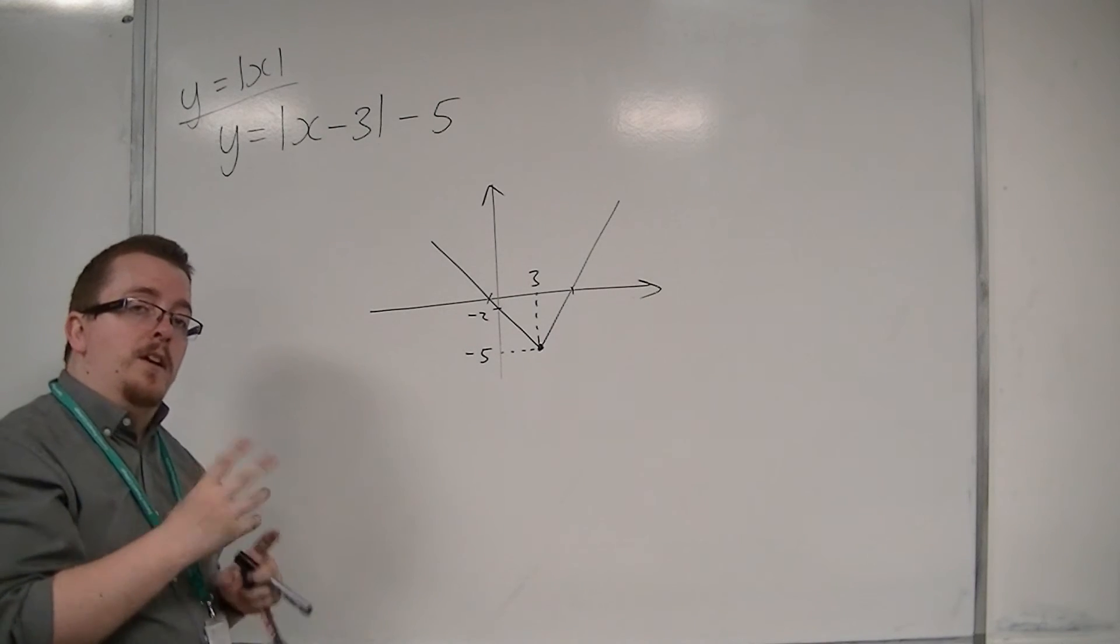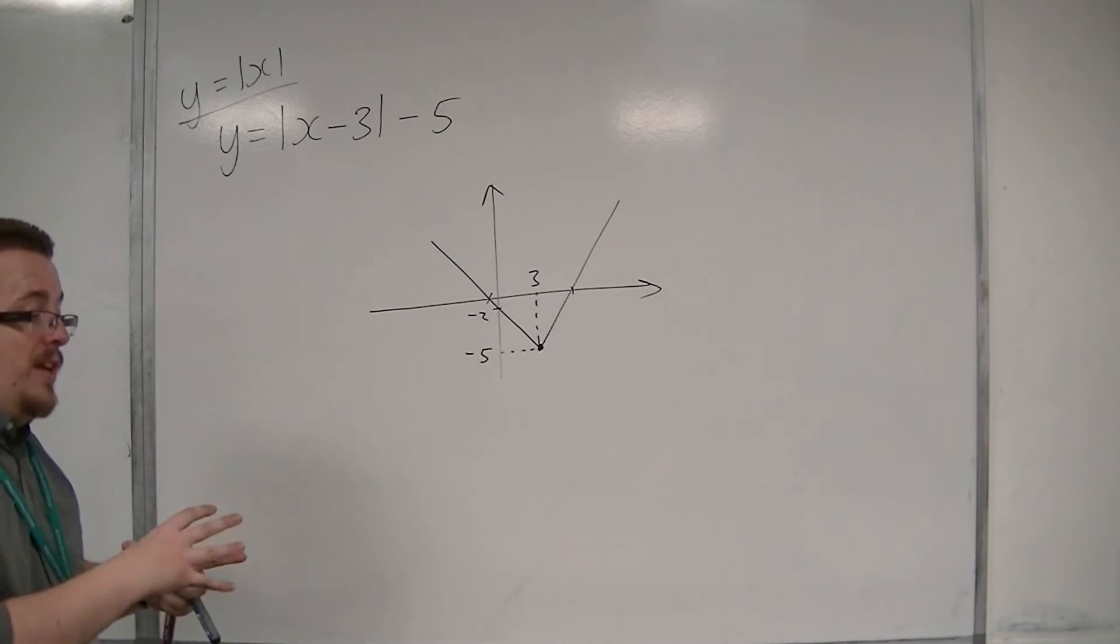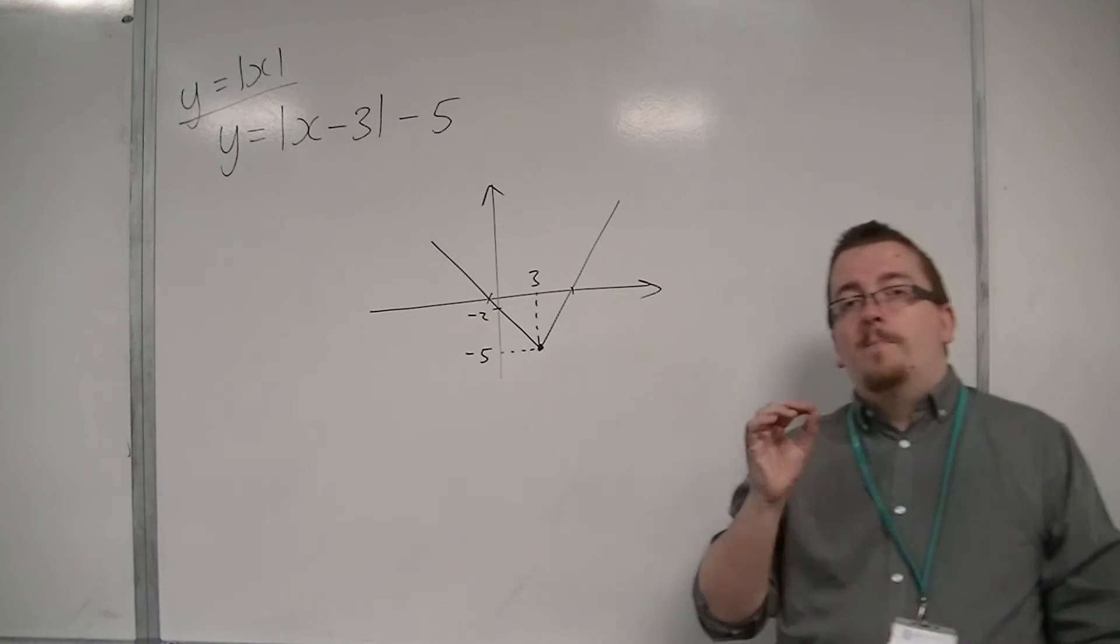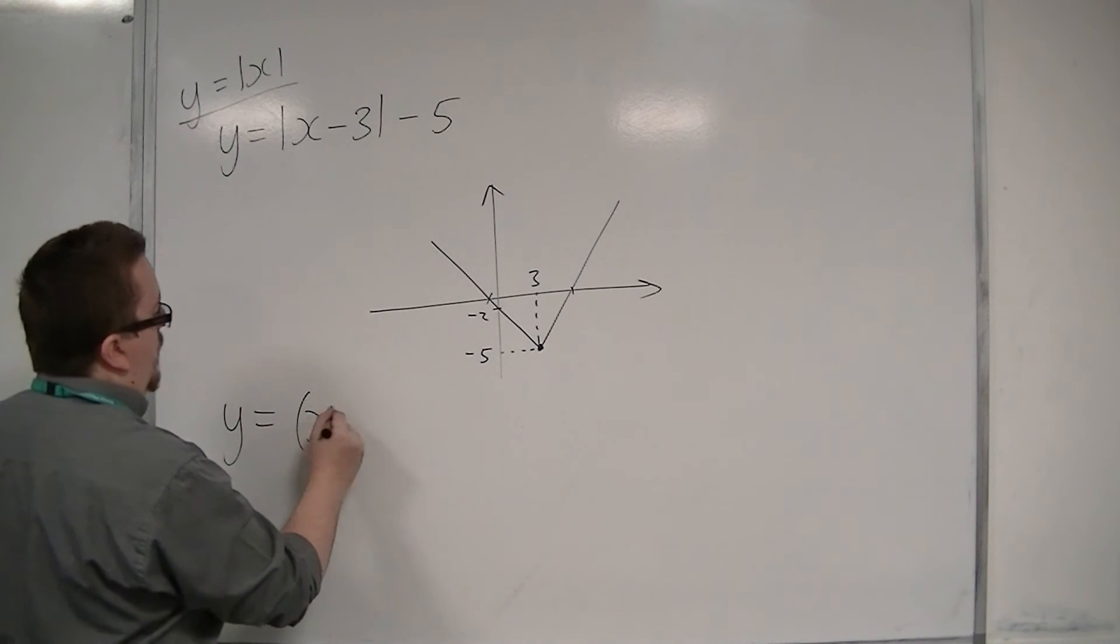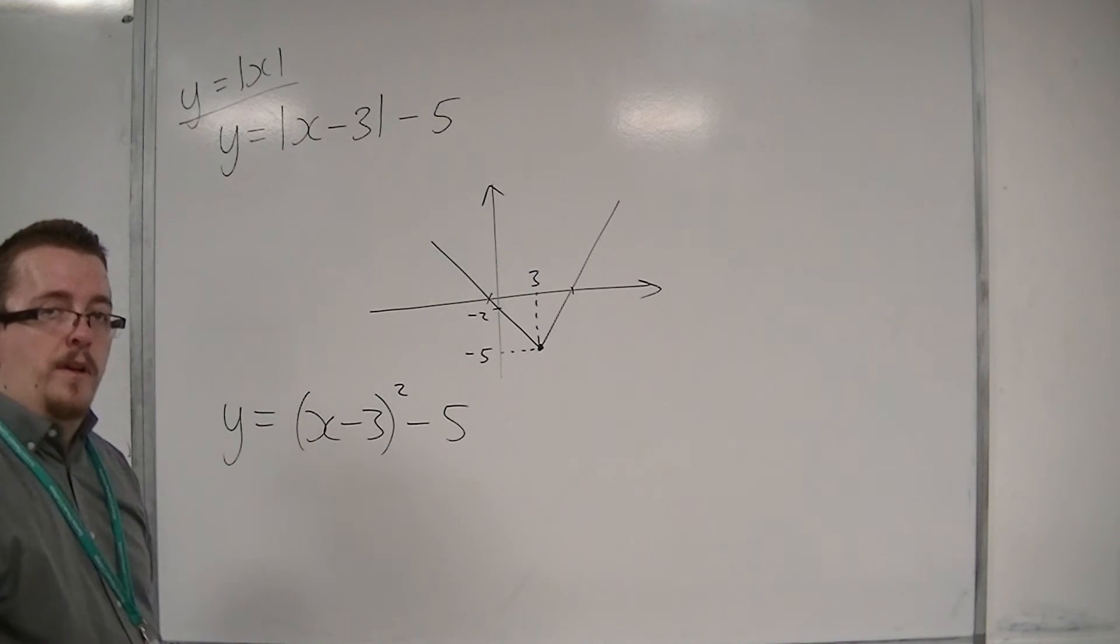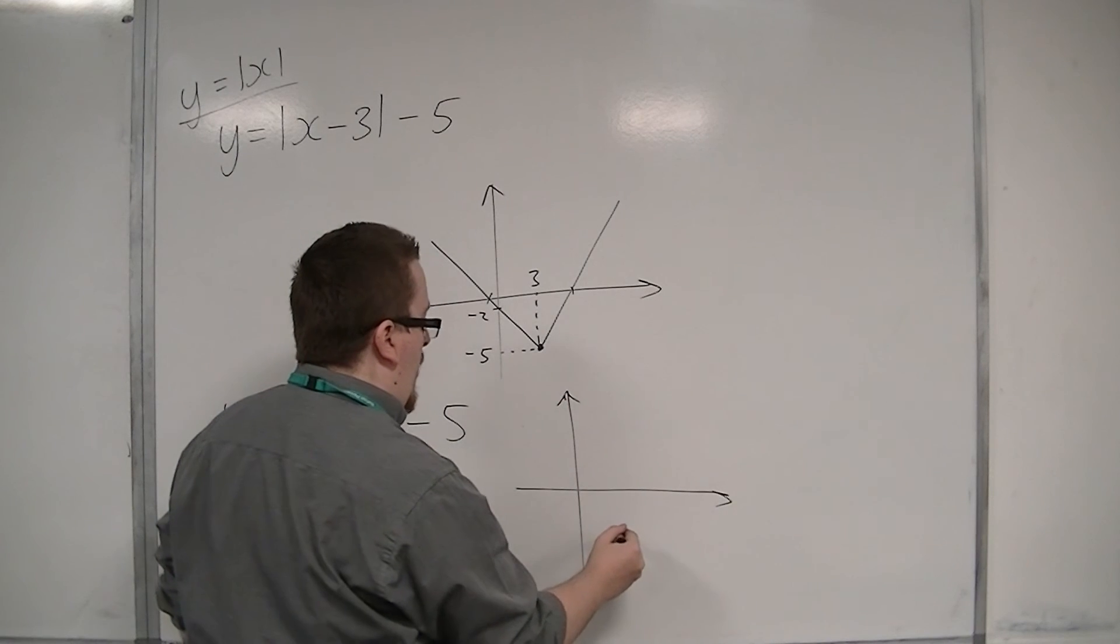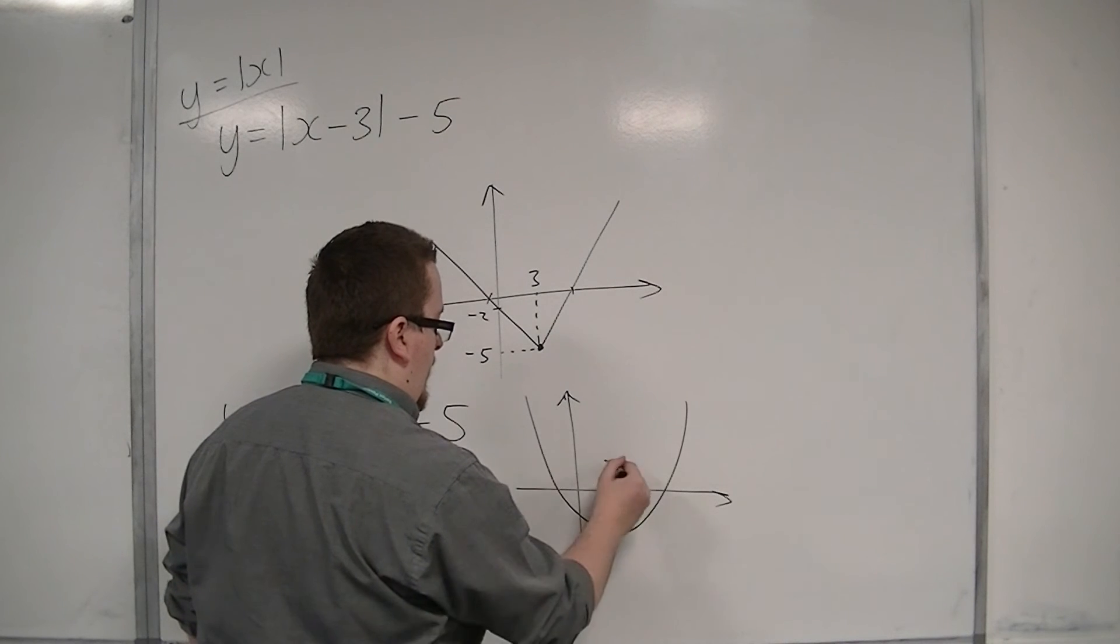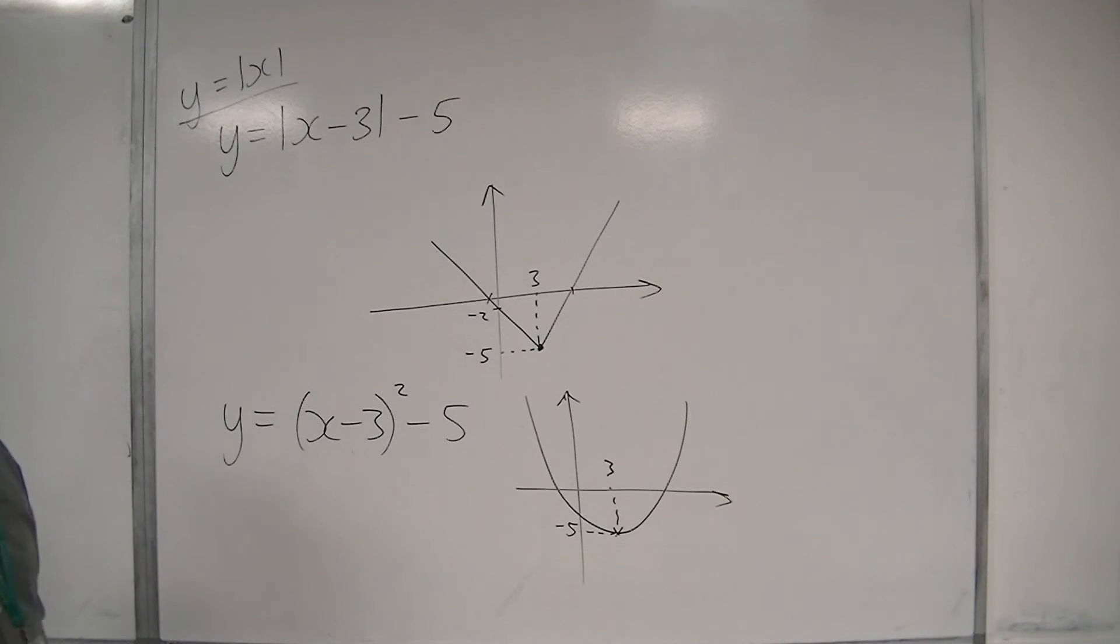Now, this should hark back to memories from core 1, when we looked at the equation of a quadratic graph in completed square form. So y equals x minus 3 all squared, take away 5, for example, is a quadratic where the vertex is at 3 minus 5. You can read it straight off from the equation.